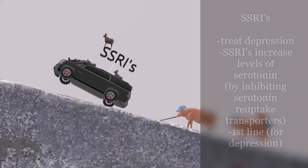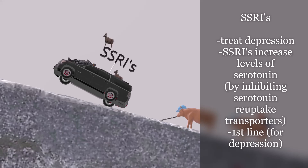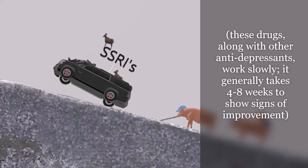These drugs are mainly used to treat depression. Depression has been associated with low levels of neurotransmitters such as serotonin, norepinephrine, and dopamine. The SSRIs — selective serotonin reuptake inhibitors — work by increasing levels of serotonin to alleviate symptoms of depression. They inhibit serotonin reuptake transporters on the presynaptic neuron, allowing more serotonin to reach the postsynaptic neuron. SSRIs are first-line therapy for depression since they have milder side effects than other drugs.